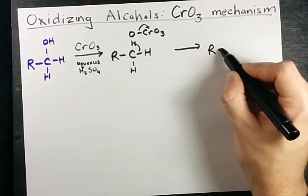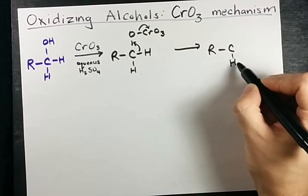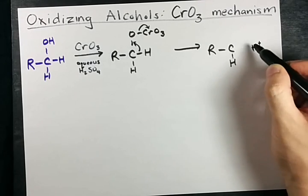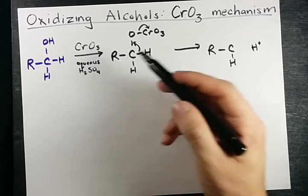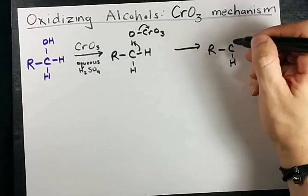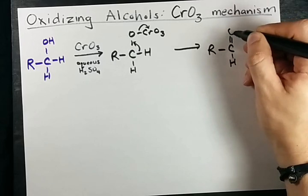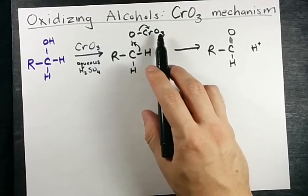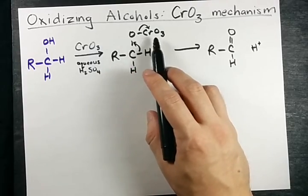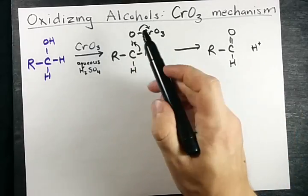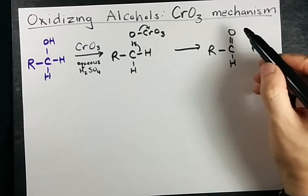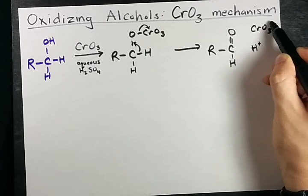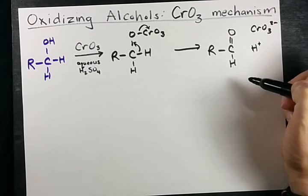I'm going to keep the orientation of my molecule the same for you. This hydrogen is now gone — it's an H⁺. Perhaps it dissolved back into the aqueous acid solvent, and the oxygen is now double bonded. What you will also notice is that the CrO₃ has gained electrons, so it's been reduced, and you end up with CrO₃²⁻ ions in the solution.